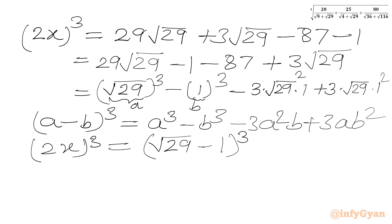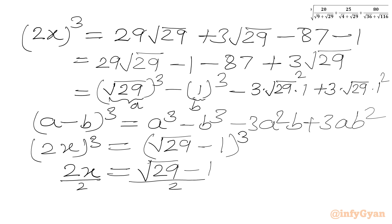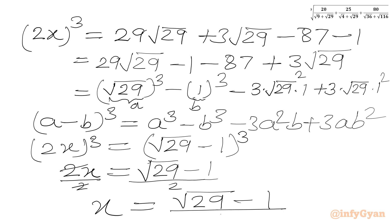For real values of x, we take the cube root of both sides and get 2x = √29 − 1. Now we divide both sides by 2, so the 2s cancel and we get our final answer: x = (√29 − 1) / 2.